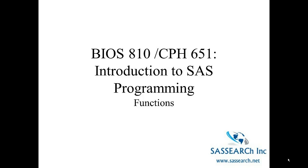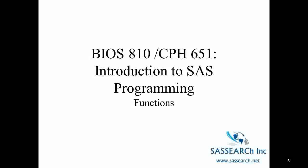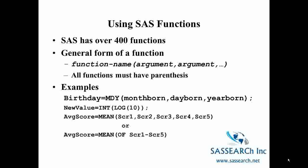This video introduces SAS numeric and character functions and how they are used in the data step to create new variables and alter existing ones. SAS has over 400 functions. The general form of a function is the function name, and then there are parentheses. Inside the parentheses are the arguments or parameters you use for the function. All functions must have the open and closed parentheses.